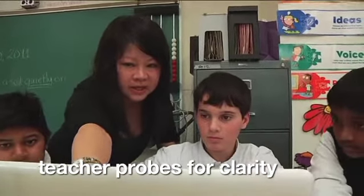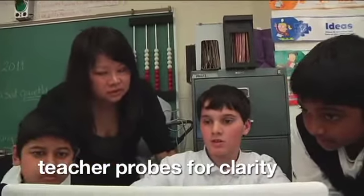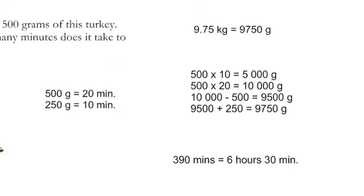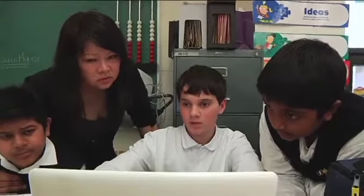Can you explain what that step is? So the 10,000 minus the 500. The 10,000 was the 50 times 20. The 20 was the 20 minutes to make 10,000, to do 10,000 grams or 10 kilograms.